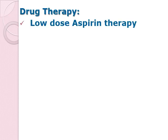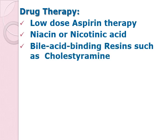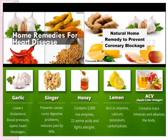Drug therapy options include low-dose aspirin therapy to prevent thrombus formation, niacin or nicotinic acid, bile acid binding resins such as cholestyramine to help in the metabolism of fats, and cholesterol synthesis inhibitors or statins — such as lovastatin, pravastatin, simvastatin, and atorvastatin. Patients may also opt for complementary and alternative medicines, though these are not widely established and should be taken under physician supervision.